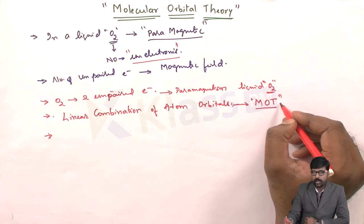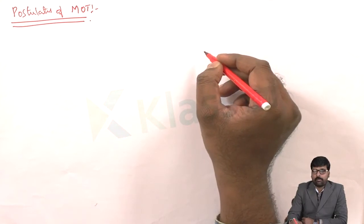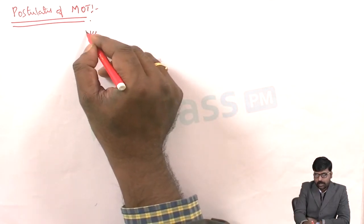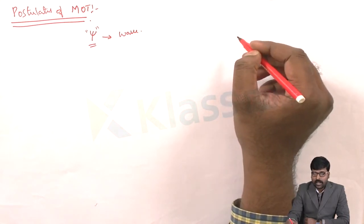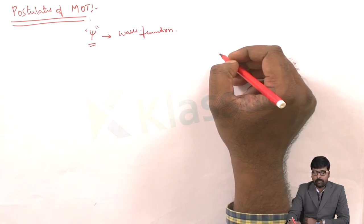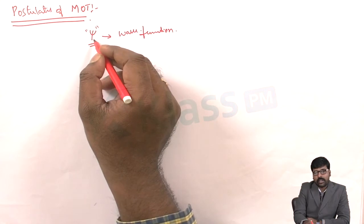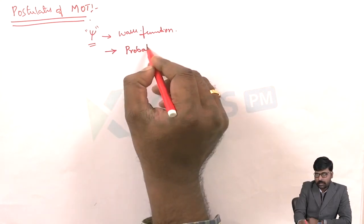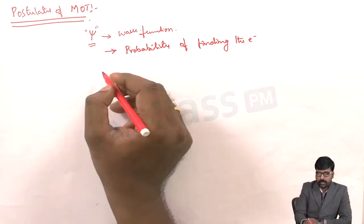Let's see the basic postulates of molecular orbital theory. The application of quantum mechanics to molecules was put forward and a new symbol, psi, was introduced as the wave function in molecular orbital theory. Considering the wave nature of the electron, molecular orbital theory was successfully proposed by implementing quantum mechanics. A wave function psi is assigned to any given atomic orbital and can be used to calculate the probability of finding the electron in an atom and in a molecule around the nucleus.